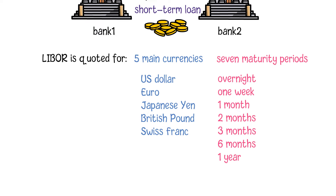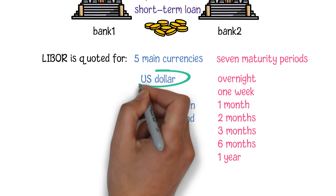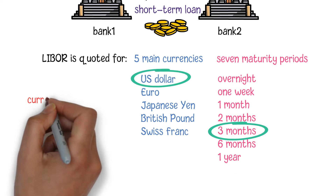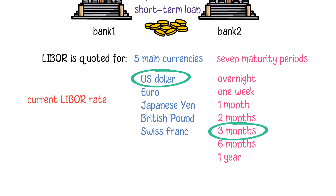In the combination of those currencies and maturities, the most commonly quoted rate is the three-month US dollar LIBOR, which is usually referred to as the current LIBOR rate.